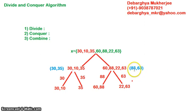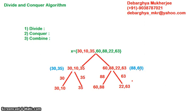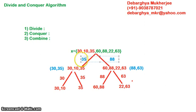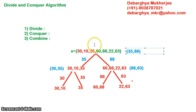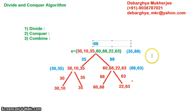We are again in the conquer step: within 88 and 63, it is a trivial solution — 88 is the biggest. From the left we have 35. Now we combine 35 and 88, and we get 88 as the maximum number overall. This is how we solve the problem using the Divide and Conquer technique.